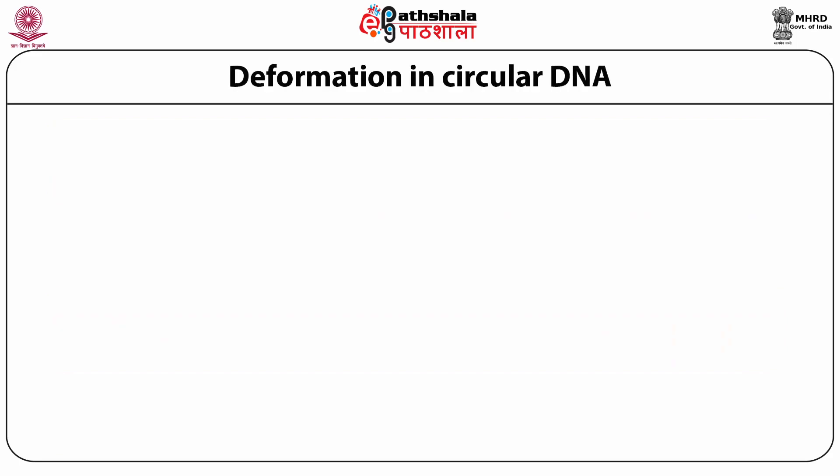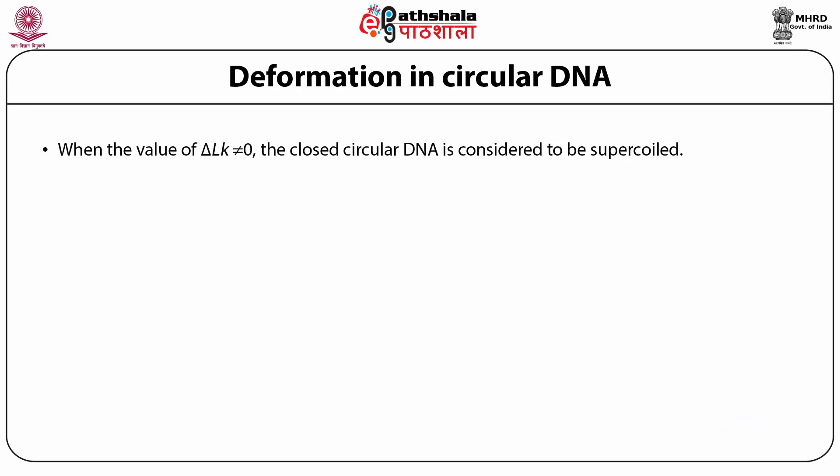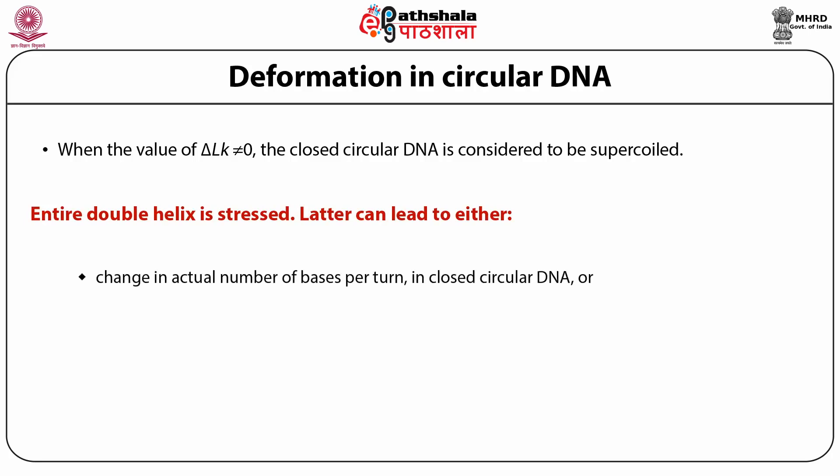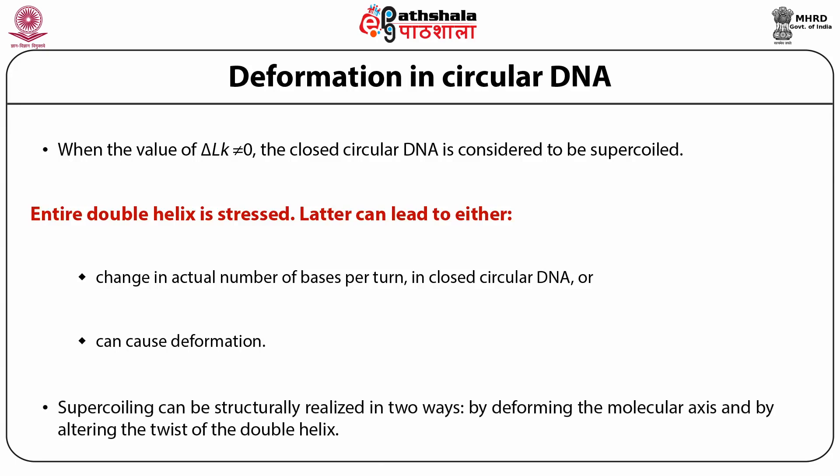Deformation in circular DNA: when the value of delta LK is not equal to zero, the closed circular DNA is considered to be supercoiled. The entire double helix is stressed. This can lead to either a change in the actual number of bases per turn in closed circular DNA or can cause deformation. Supercoiling can be structurally realized in two ways: by deforming the molecular axis, and by altering the twist of the double helix.